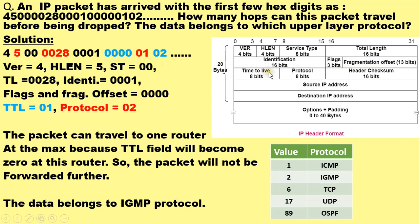The Time To Live (TTL) field corresponds to the hexadecimal value 01 — it is an 8-bit field. The protocol field corresponds to the hexadecimal value 02. For this particular example we are interested in the TTL field value and the protocol field value, since we must answer the questions based on these two values.